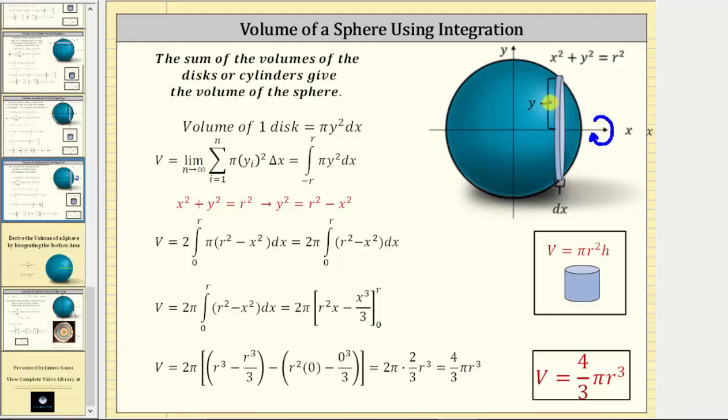notice how the radius is y, and the height would be from a small change in x represented by delta x, or differential x. So we can say the volume of one disk, or one slice of the sphere, equals pi y squared times differential x.